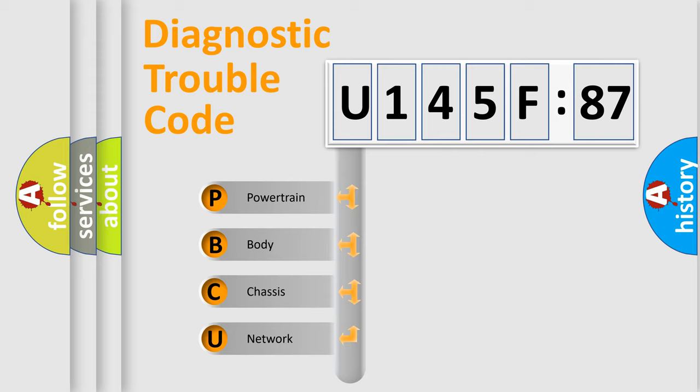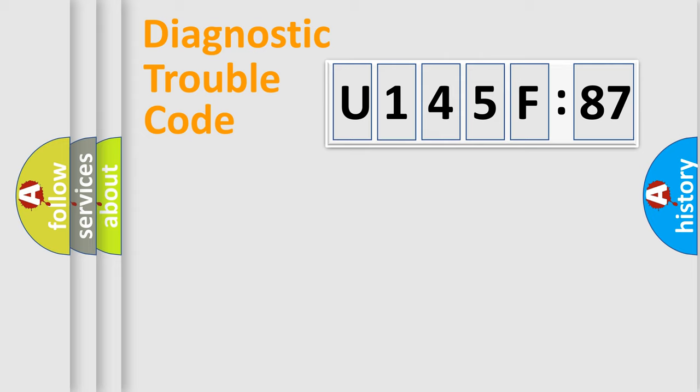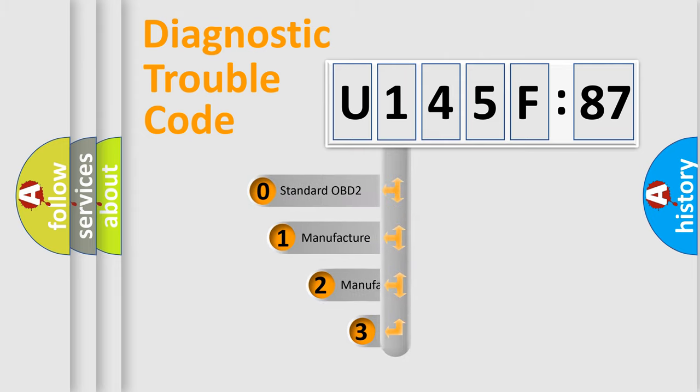We divide the electric system of automobile into the four basic units: Powertrain, Body, Chassis, and Network. This distribution is defined in the first character code.